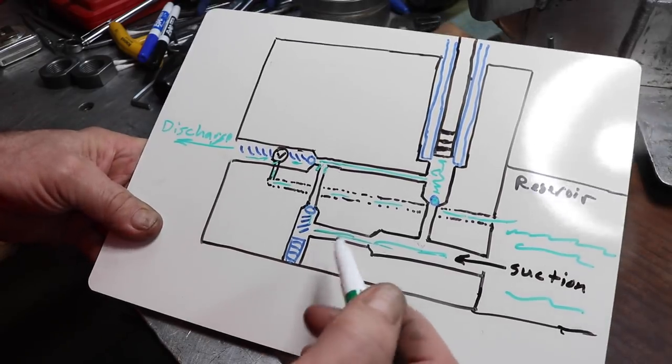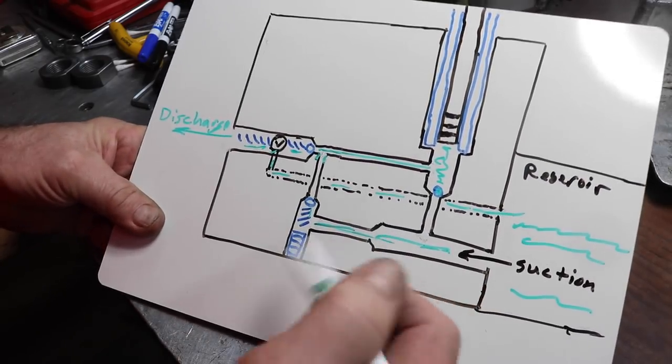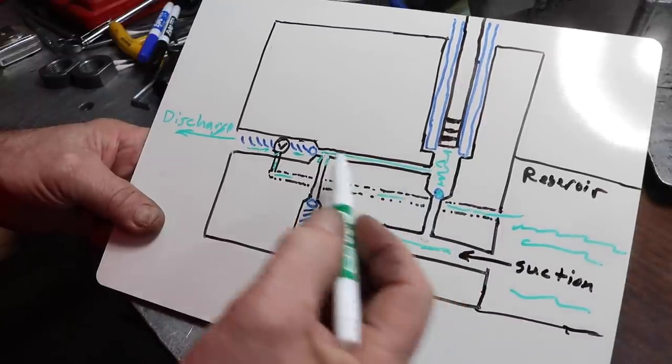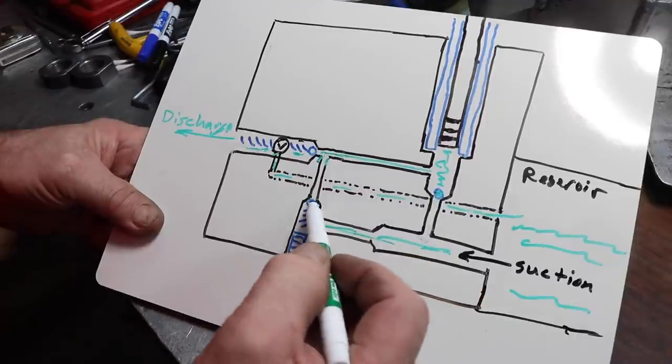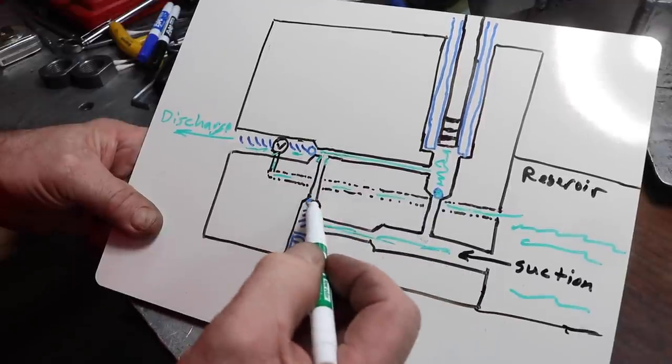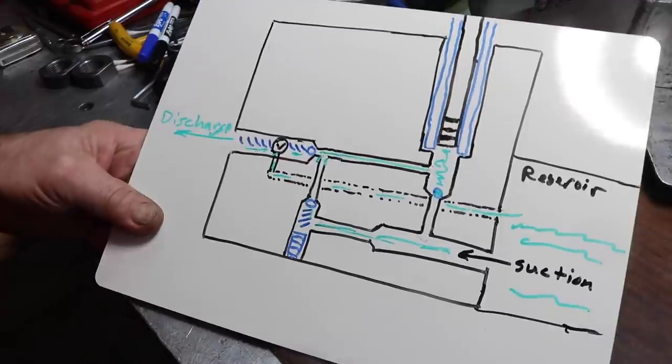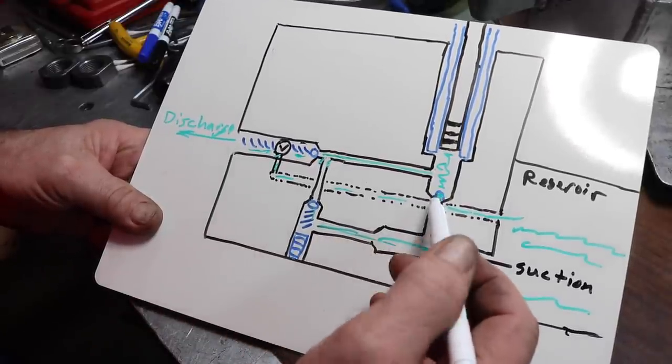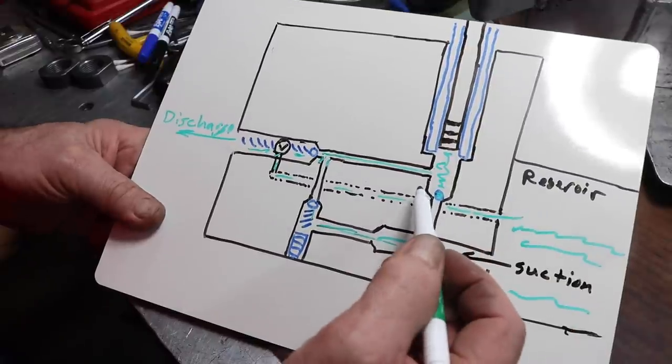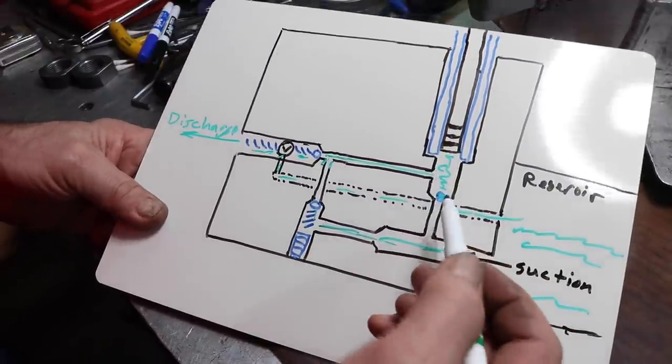Pretty simple. But since we're dealing with some pretty high pressures, it's so critical that these balls, all of them, all three of these balls seat really well. They can't leak. Just the smallest of leak would make the difference between 4,000 pounds and 7,000 pounds. Or 1,000 pounds and 7,000 pounds.